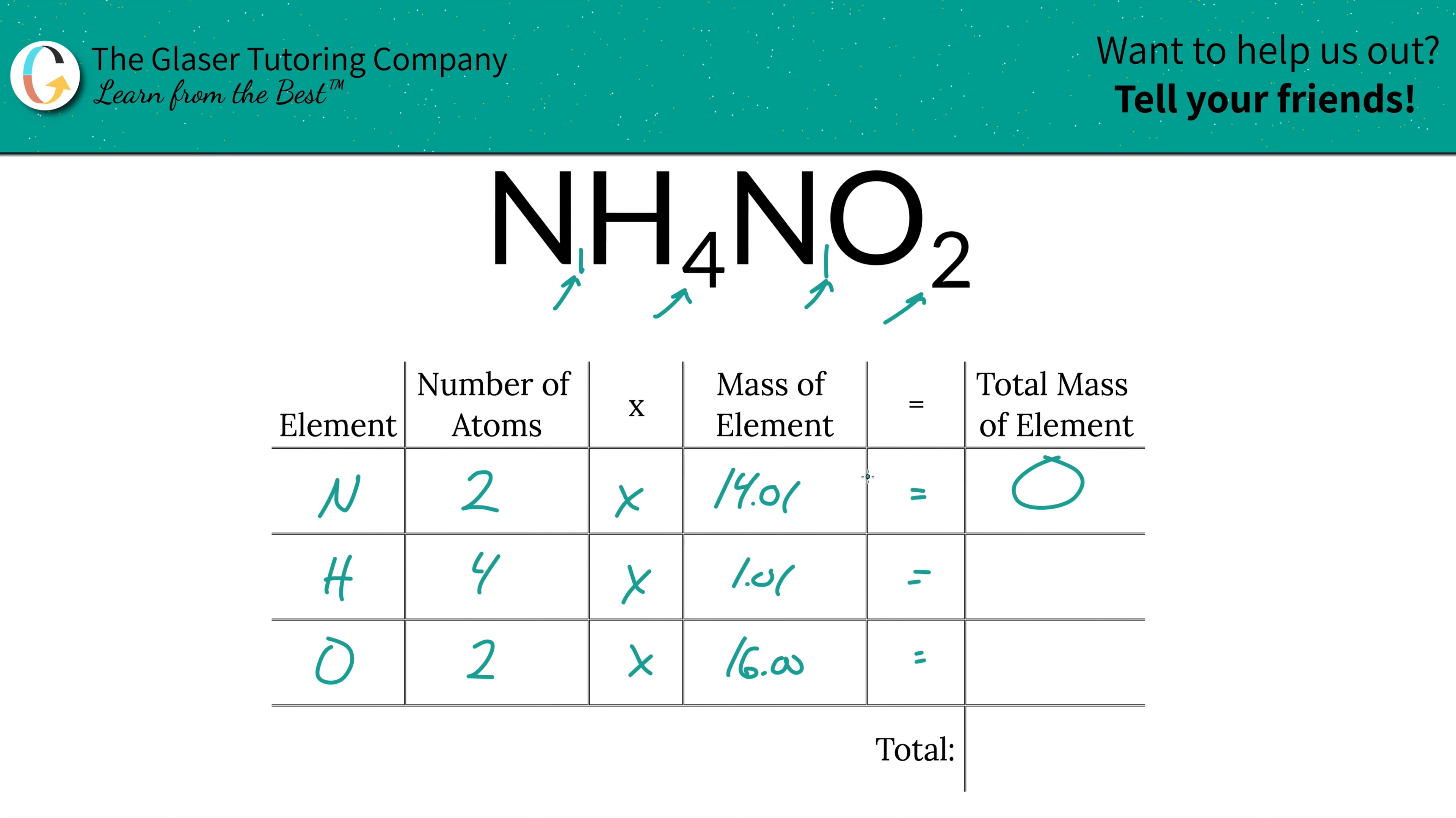Then to find the total mass of the element in the compound, just simply multiply this row across. So that's going to be 28.02 units of mass for nitrogen. In total, that's going to be 4.04 units of mass for hydrogen, and that's going to be 32 for oxygen.